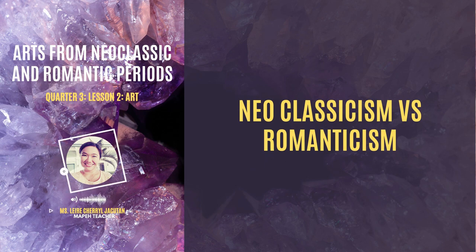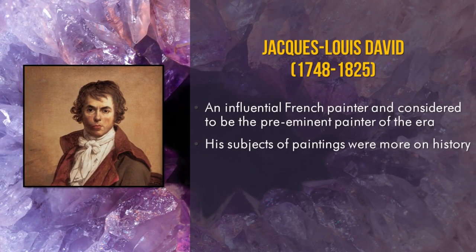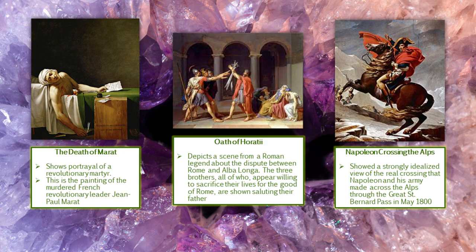To further understand what neoclassical art and romanticism is all about, let us study the lives of neoclassical artists and their famous art. The first artist we are going to discuss is Jacques-Louis David, from 1748 to 1825. He is an influential French painter and considered the preeminent painter of the era, and his subjects of paintings were more on history. Some of his famous artworks are The Death of Marat, Oath of the Horatii, and Napoleon Crossing the Alps. All of these paintings show characteristics of neoclassical style. For example, The Death of Marat shows the portrayal of the revolutionary martyr Jean-Paul Marat, who was murdered during the time of the French Revolution.